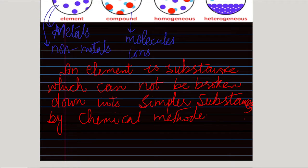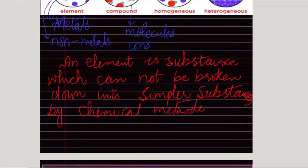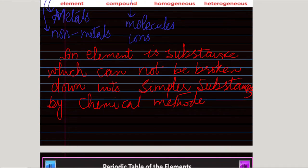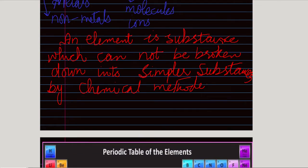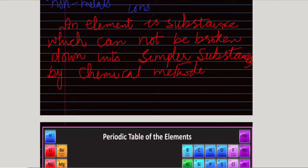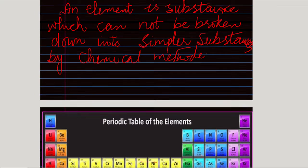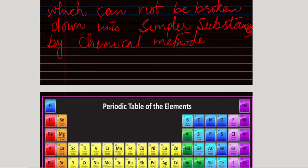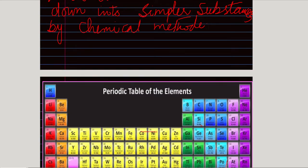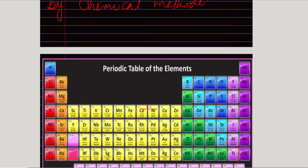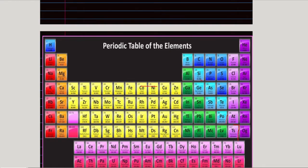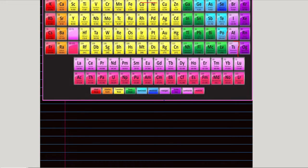Examples of elements include metals like gold and silver, and non-metals like hydrogen and oxygen. There are 116 known elements, out of which 92 elements are found naturally on Earth, and the other 24 elements have been made artificially by scientists.